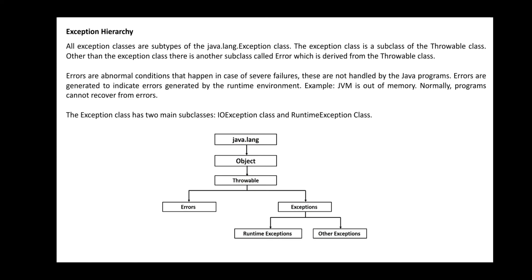We also saw the exception hierarchy — how an exception is raised within a program, whether it is a runtime exception or a compile-time exception, through the throwable statement. It is accessed through the Object class and the java.lang package, which covers both errors and exceptions.